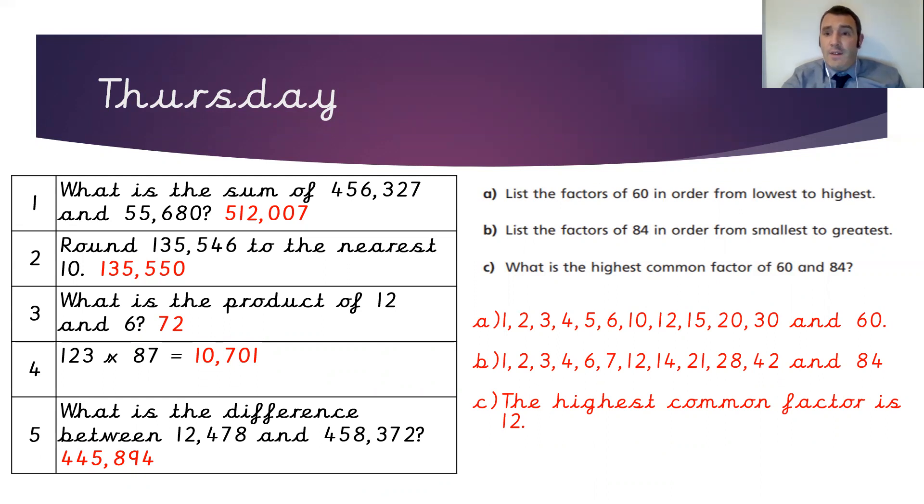The factors of 84 are 1, 2, 3, 4, 6, 7, 12, 14, 21, 28, 42, and of course, 84. The highest common factor in both of those lists is 12.